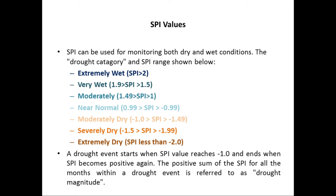From 0.99 to negative 0.99, SPI indicates near-normal conditions. For moderately dry conditions, SPI ranges from negative 1.0 to negative 1.49. For severely dry conditions, SPI ranges from negative 1.5 to negative 1.99. For extremely dry conditions, SPI should be less than negative 2.0.